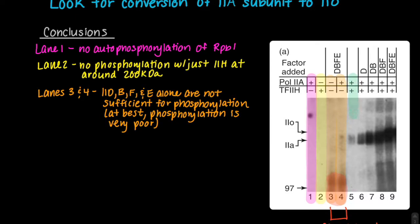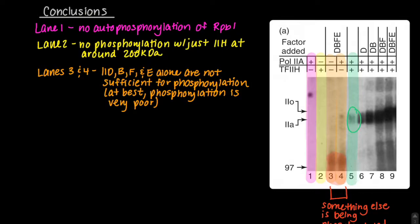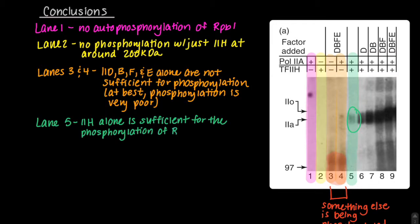In lane 5, which is highlighted in green, Pol 2A and TF2H were added. The other general transcription factors, TF2D, B, F, and E were not added. This lane shows that TF2H alone is sufficient for the phosphorylation of RPB1.